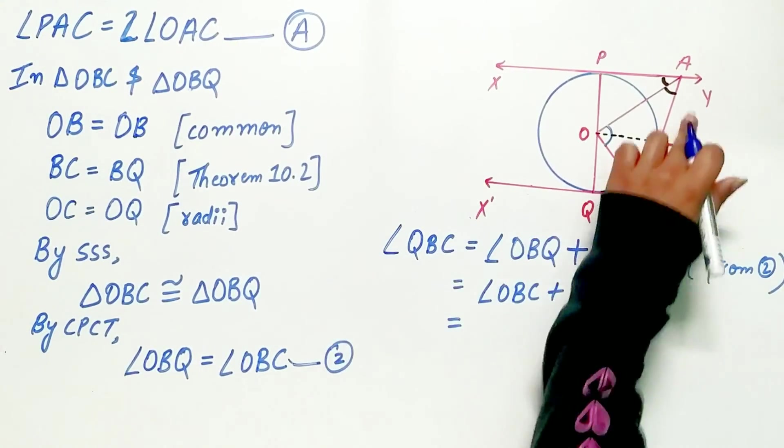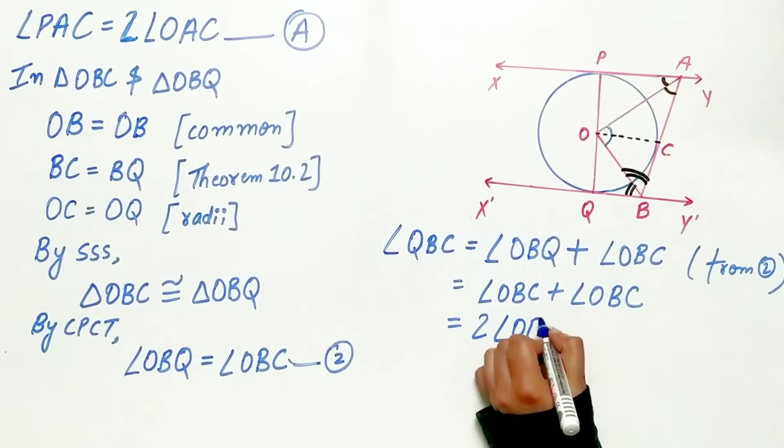Hence, angle QBC is equal to twice of angle OBC.